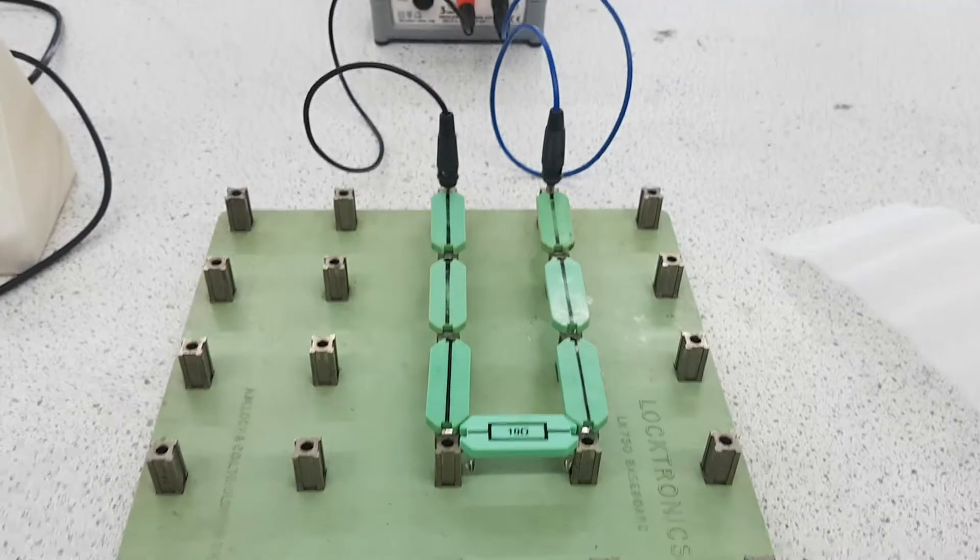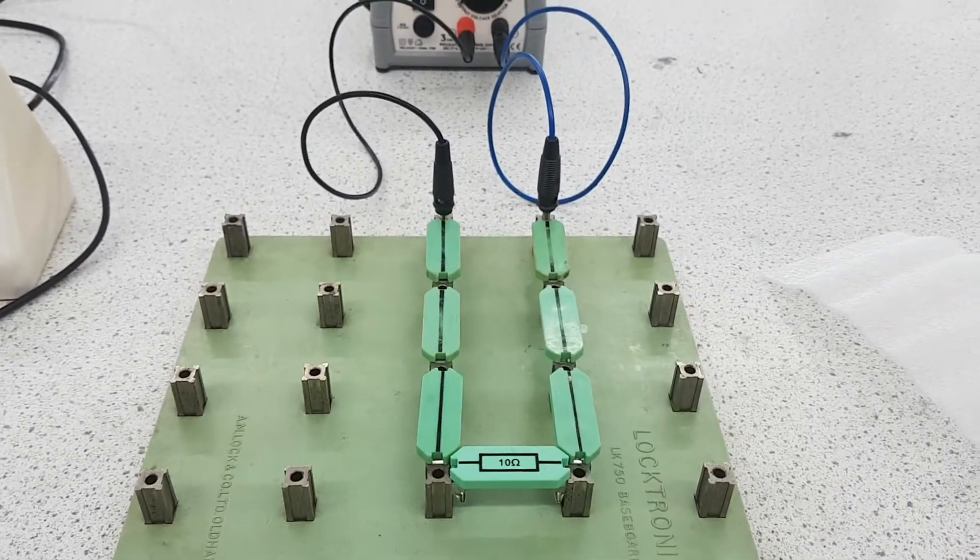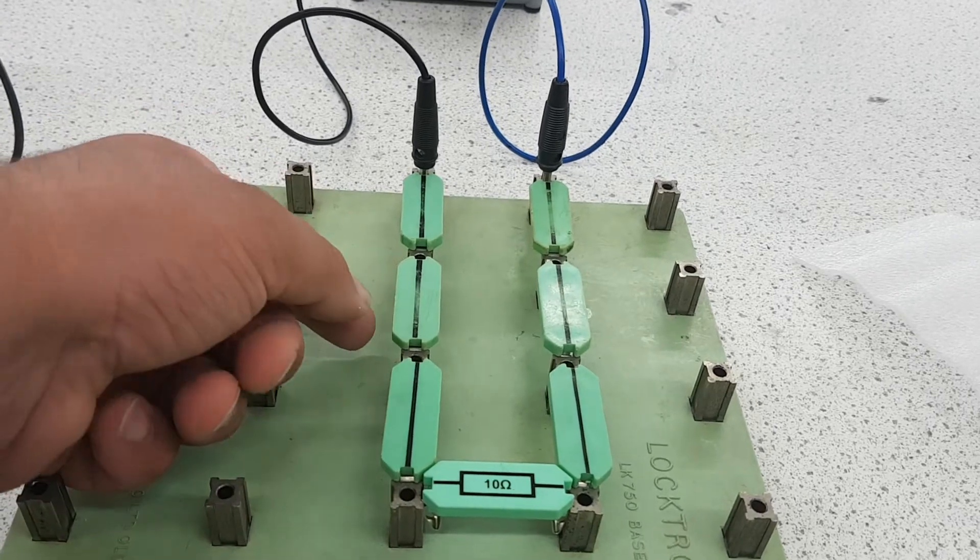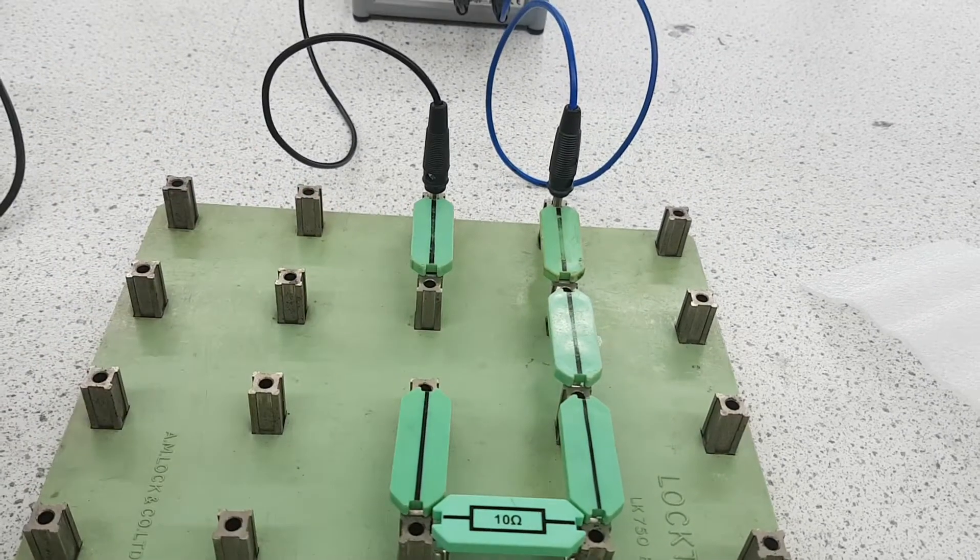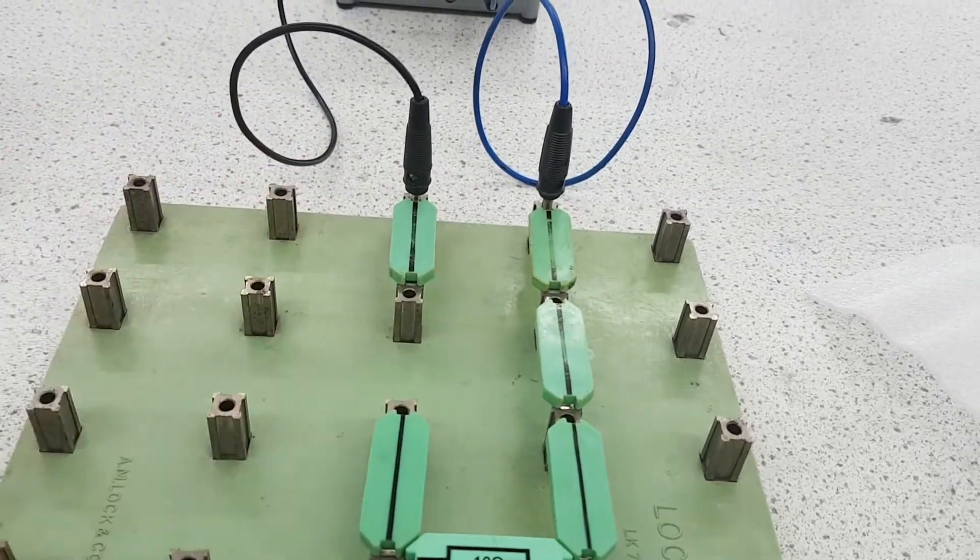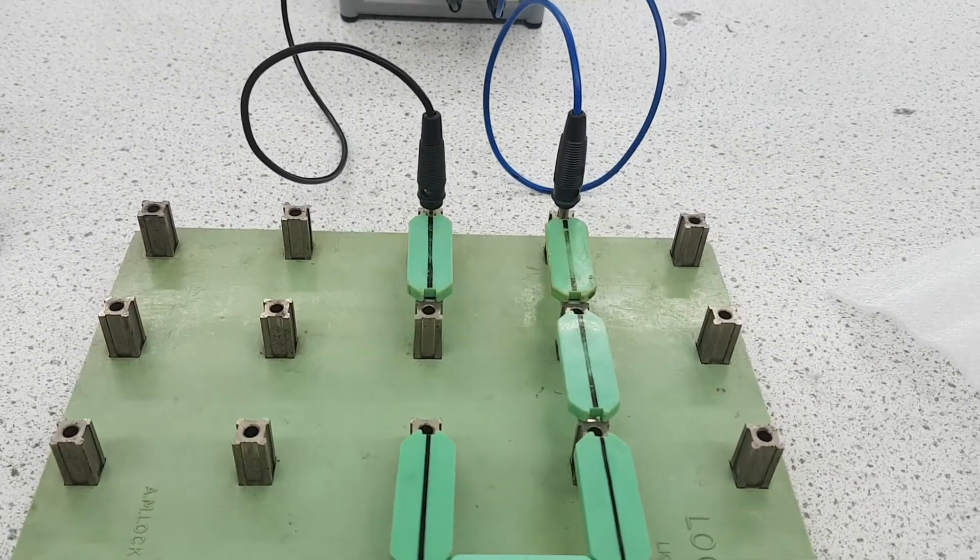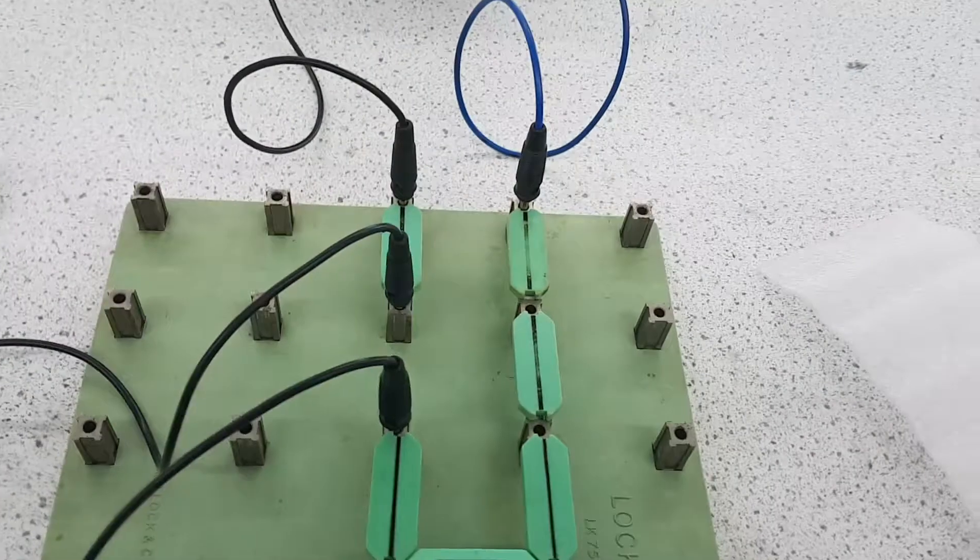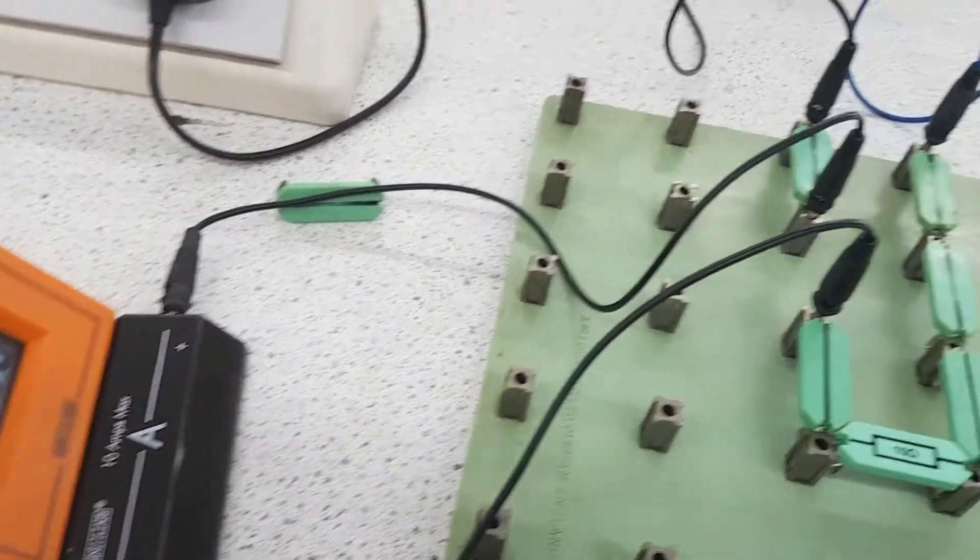We're going to place our ammeter in series. Now to do that we need to remove one of these wires, so I'm going to remove this wire. And in the two free spaces I'm going to place my ammeter, because an ammeter needs to be placed in series. So there it is, my ammeter has been placed in series.